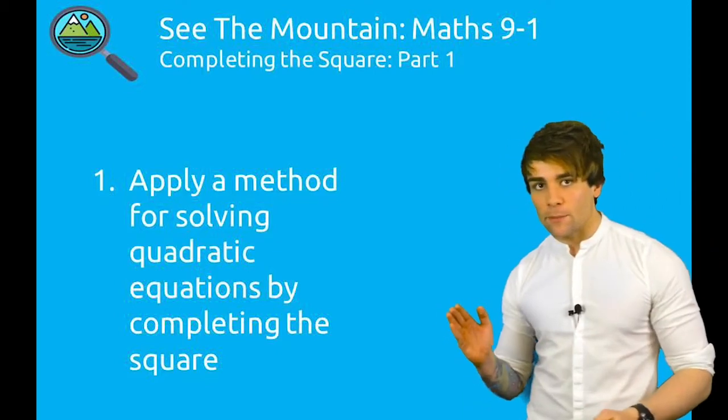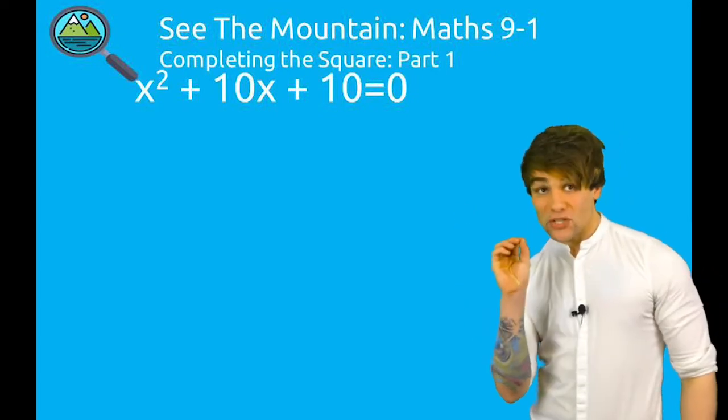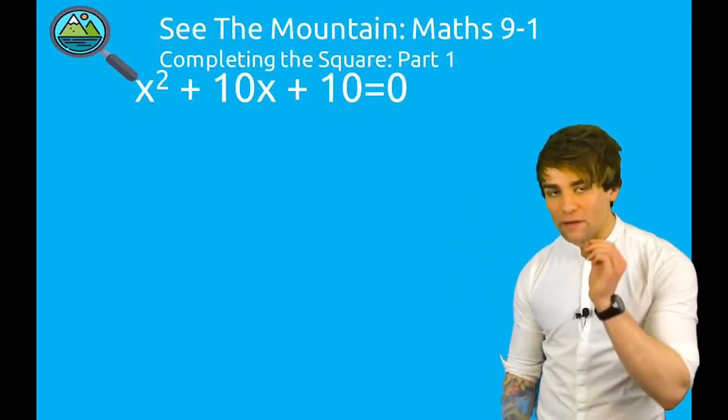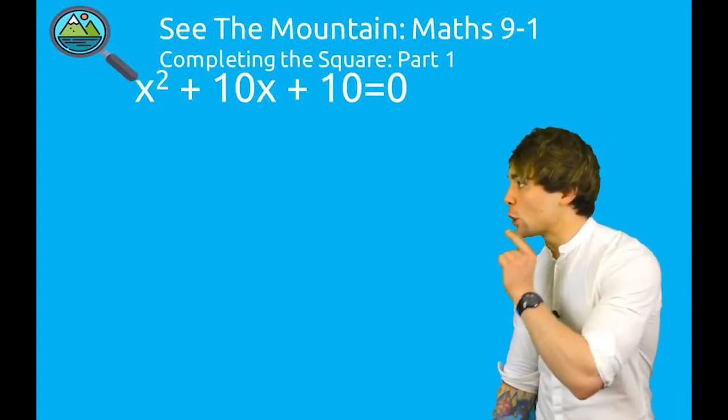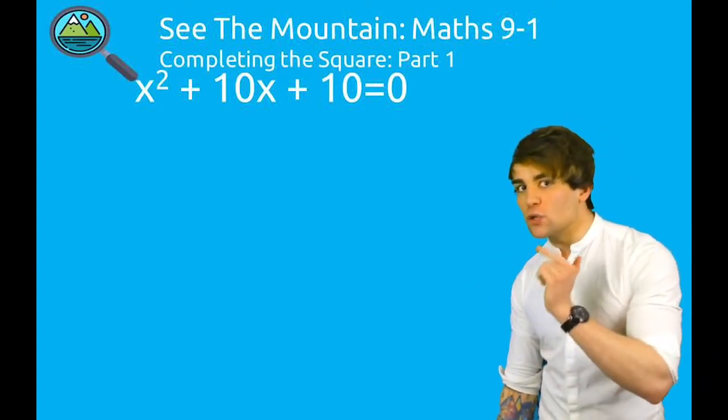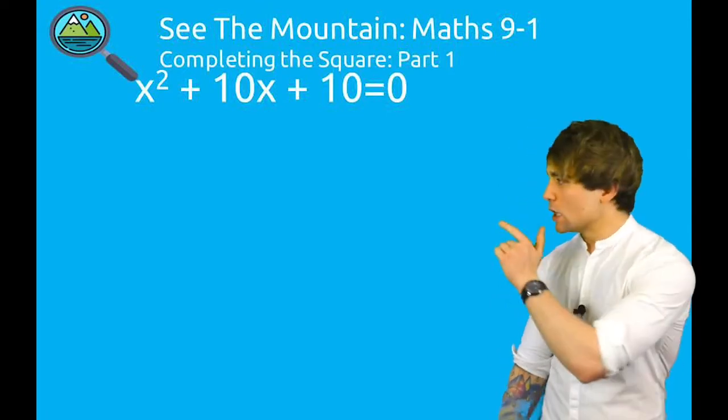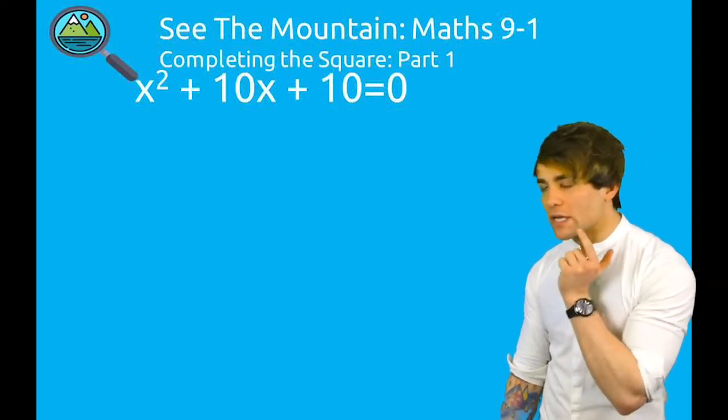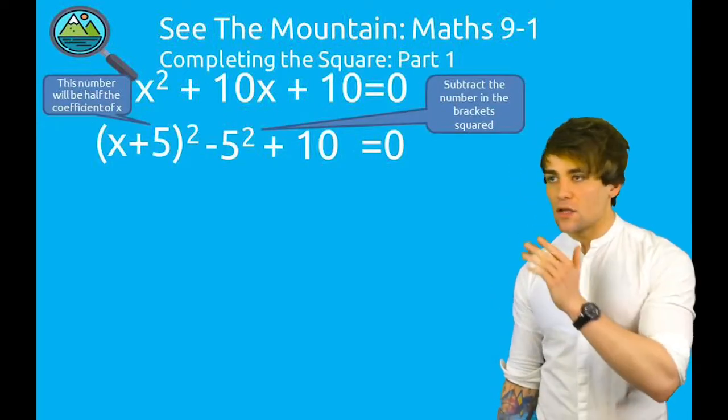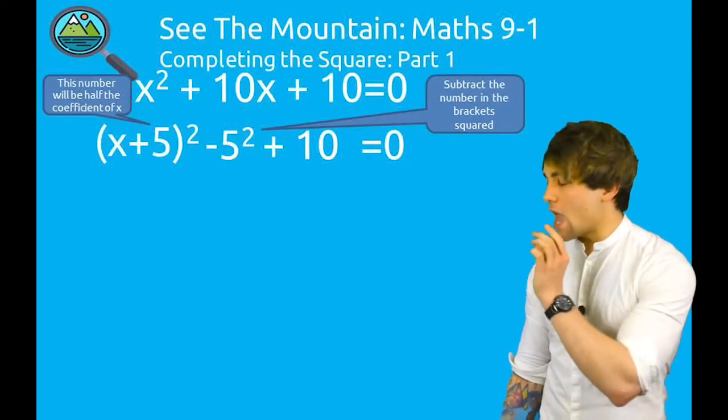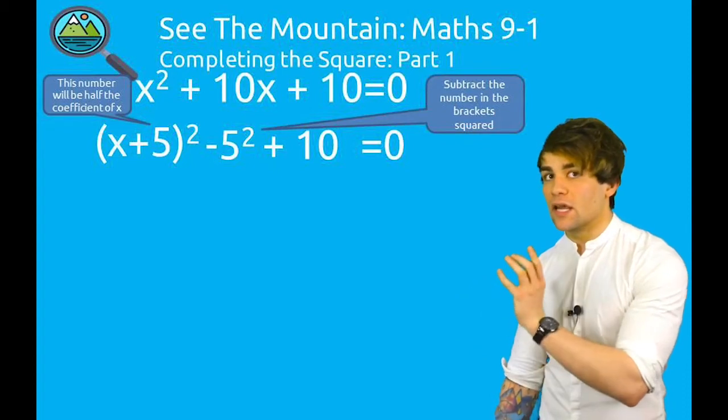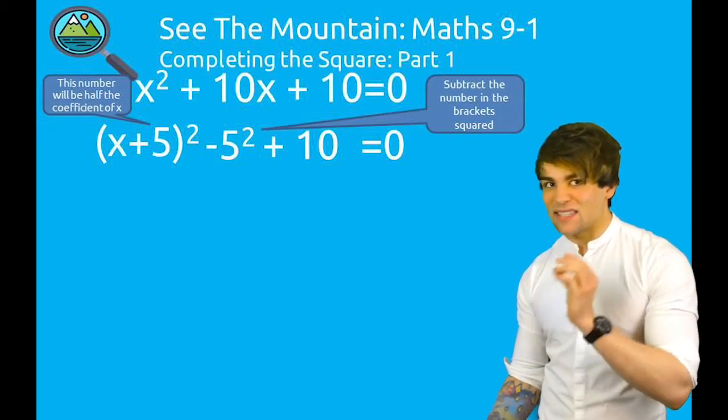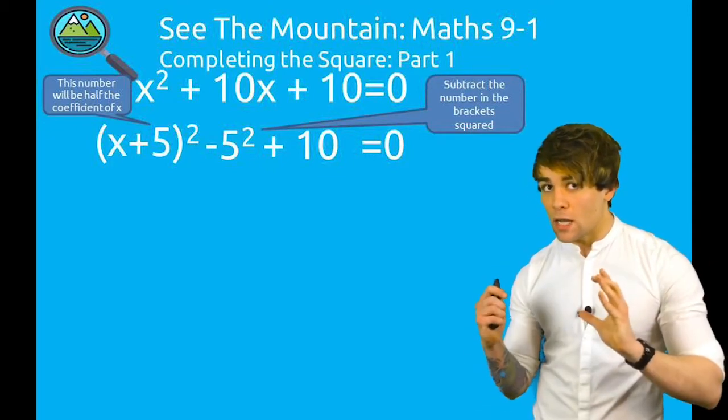Let's dive straight into this first example. You can see x² + 10x + 10 = 0. We're going to find the solutions of x by completing the square and this first step is what you do every single time. Look in the middle where that +10x is. Every time, to start us off, we're going to half whatever is next to the x. So here we've got (x + 5)² in the brackets squared. That is because next to the x is a 10.